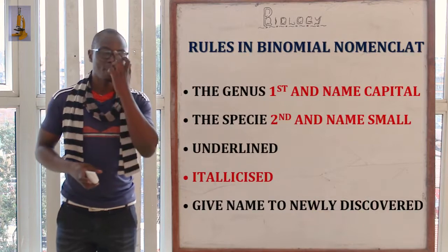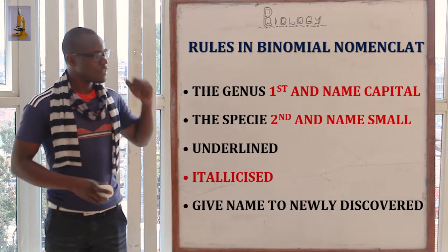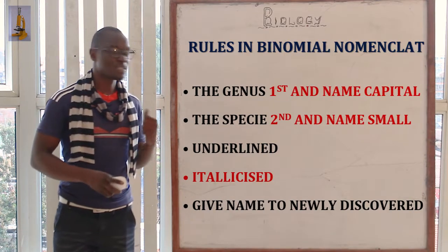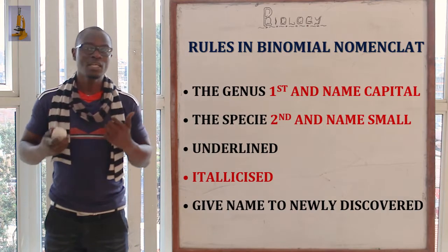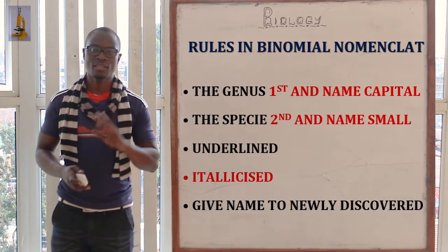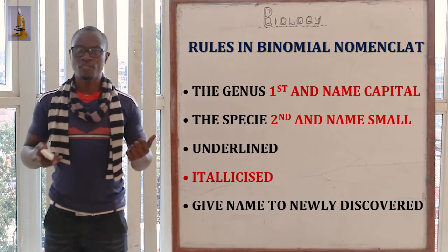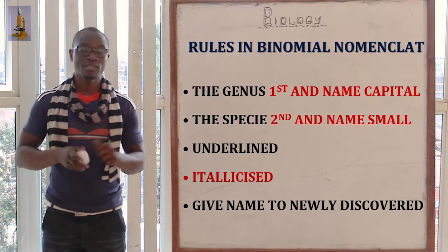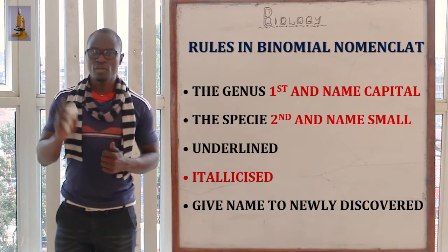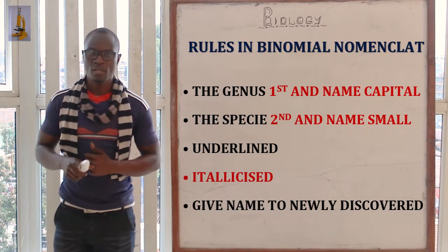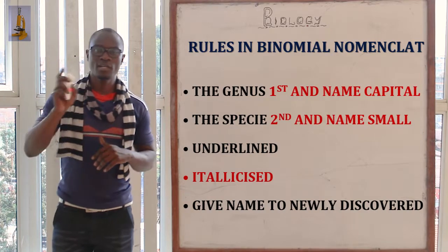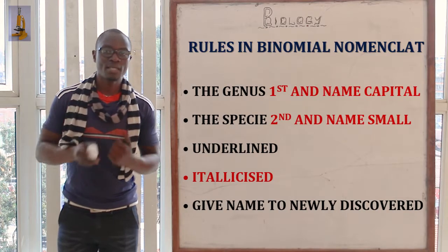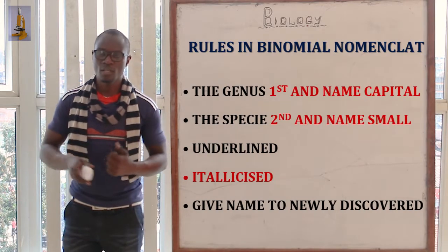Let's look at the rules in binomial nomenclature. First, the genus name must begin with a capital letter. Second, the species name must begin with a small letter. Third, these names must be underlined separately. Fourth, they must be italicized when typed. When written by hand, underline them separately. And finally, newly discovered organisms must be given a scientific name.